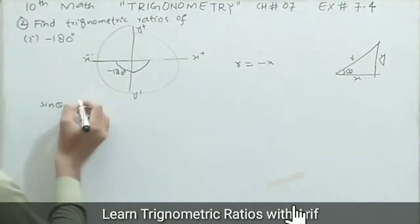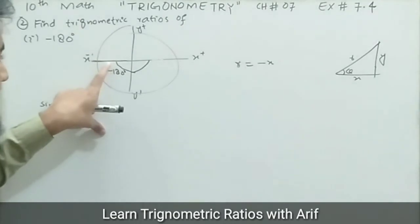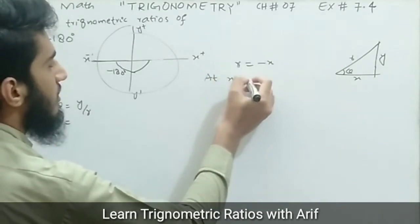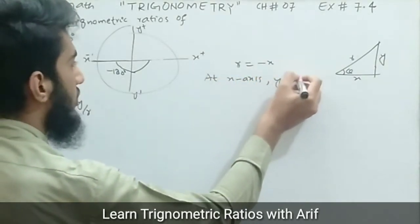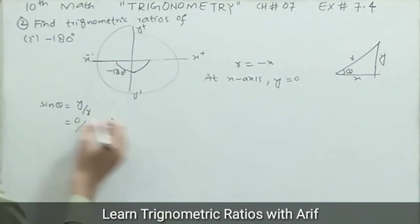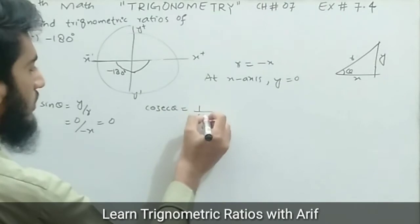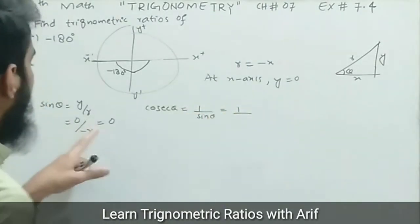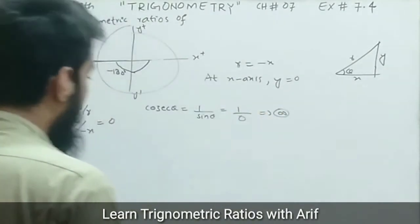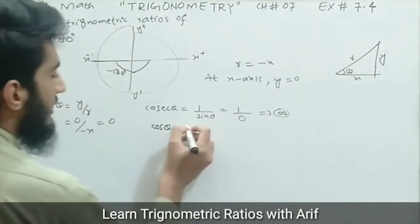Now finding sine theta: sine theta equals perpendicular divided by hypotenuse, which is y divided by r. Since the angle is on the x-axis, the y-coordinate is zero. So sine of negative 180 degrees equals zero divided by r, which gives zero. Cosecant is the reciprocal of sine, so cosecant of negative 180 degrees equals one over zero, which is undefined or does not exist.